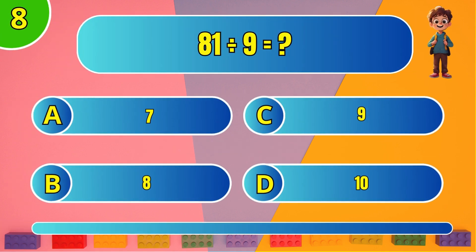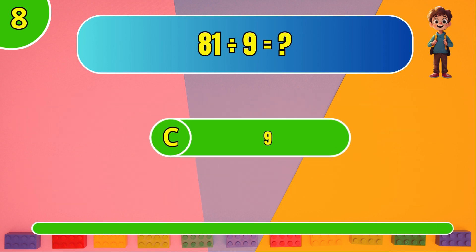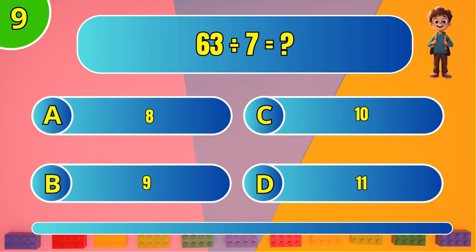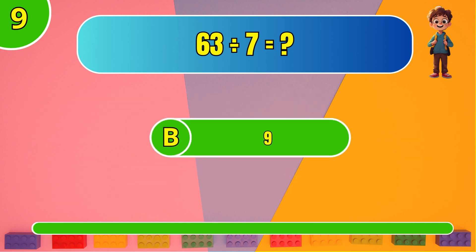What is 81 divided by 9? C: 9. What is 63 divided by 7? C: 9.